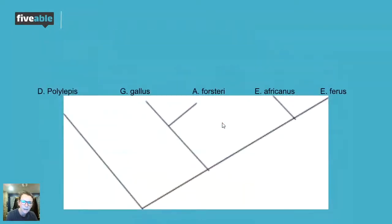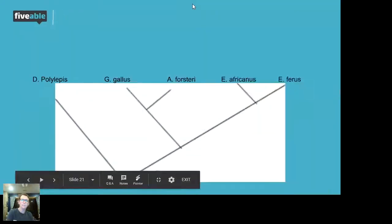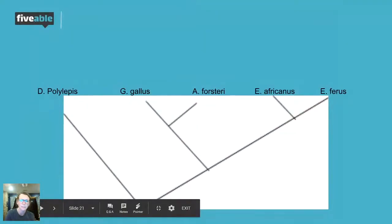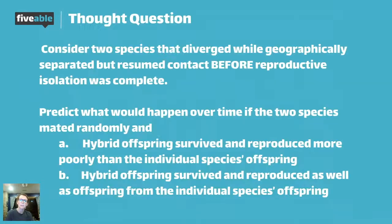The answer is shown on the next slide. As a general recap, we've talked about phylogenetic trees, allopatric and sympatric speciation, and pre- and post-zygotic barriers. It's important to see how you can apply these concepts.